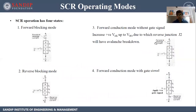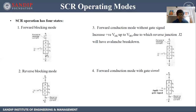SCR operation has four states. The first is forward blocking mode. The SCR has three junctions: J1, J2 and J3. In forward blocking mode, we supply positive DC voltage between anode and cathode. The positive terminal connects to the P layer at J1 and the negative terminal connects to the N layer at J3. So J1 and J3 are forward biased, but J2 is reverse biased — N is connected to the positive terminal and P to the negative terminal. Since J2 is reverse biased it won't allow current flow, so the device remains in blocking mode. This is called forward blocking mode.